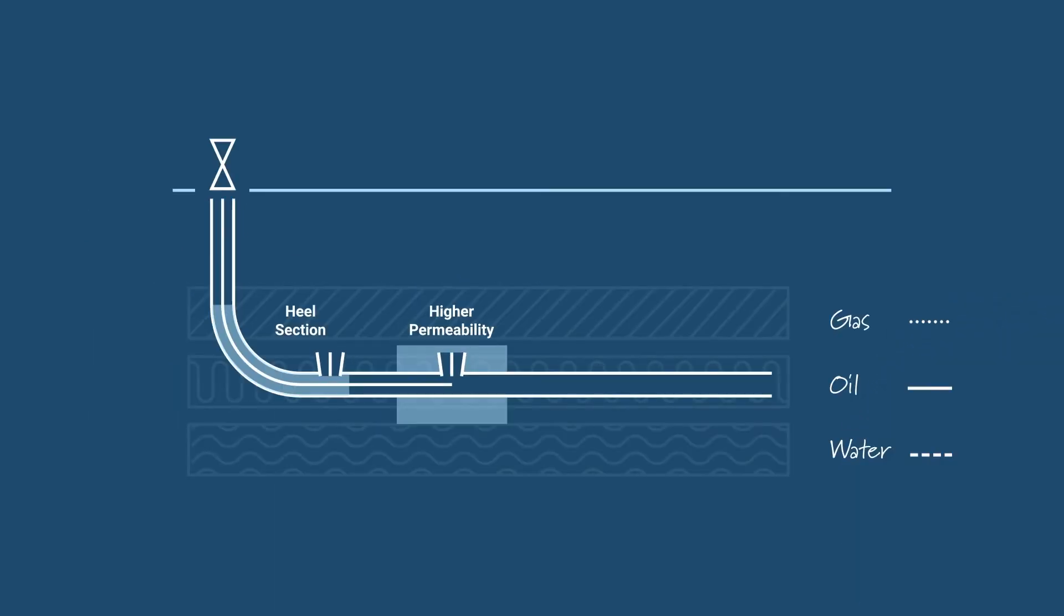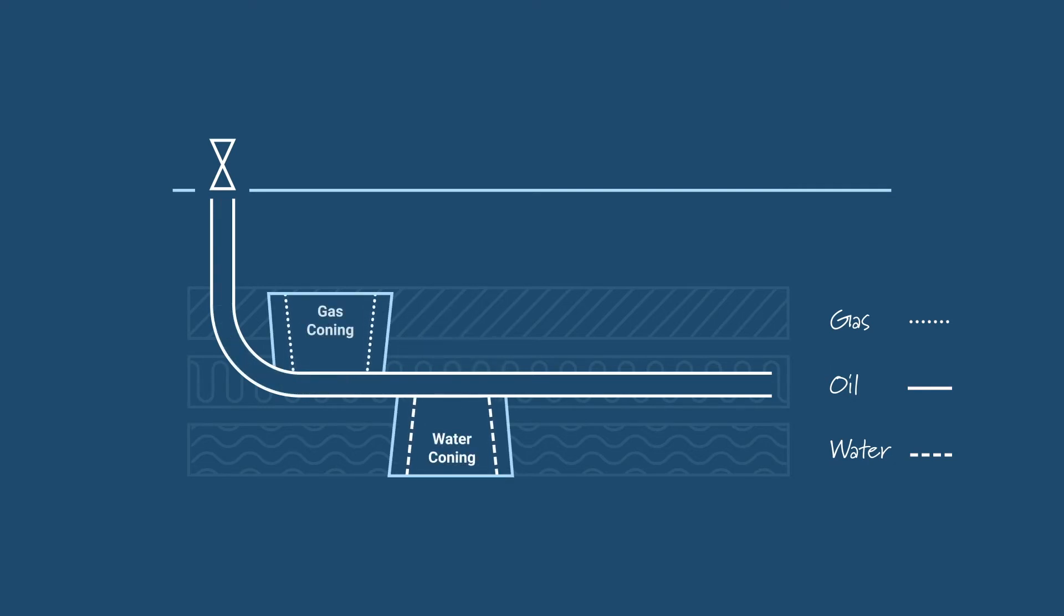As the oil is being drained, step two of production occurs. This is a major oil field issue known as water or gas coning.